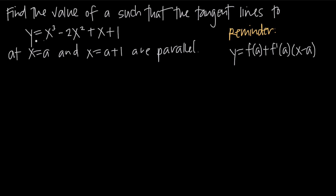Let's unpack that a little bit. We've been given this function for y in terms of x, and we need to find two lines that are tangent to this function — one at the point x equals a and the other at the point x equals a plus 1 — such that those tangent lines are parallel. The first thing we need to realize is that parallel lines have the same slope, so we're looking for two tangent lines with the same slope.